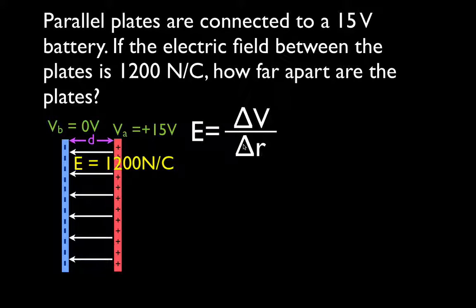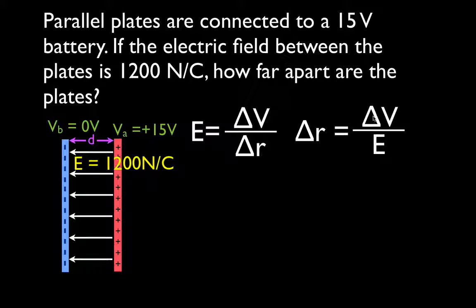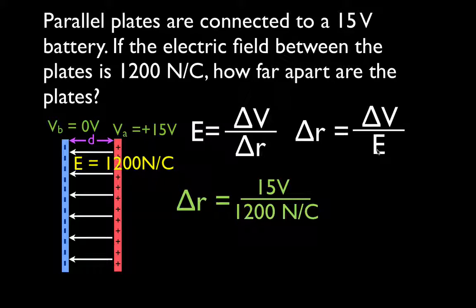We want to solve for D. We can use this equation because we have parallel plates and a uniform field — we cannot use this equation for point charges. We're given the potential difference and the electric field, so we rearrange: the separation equals the potential difference divided by the electric field, which is 15 volts divided by 1200 newtons per coulomb.